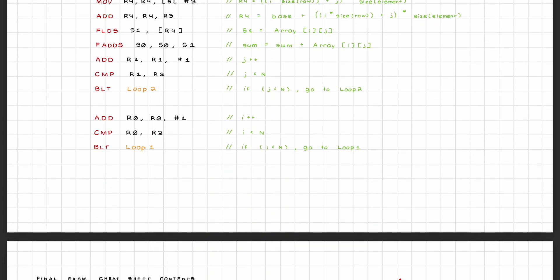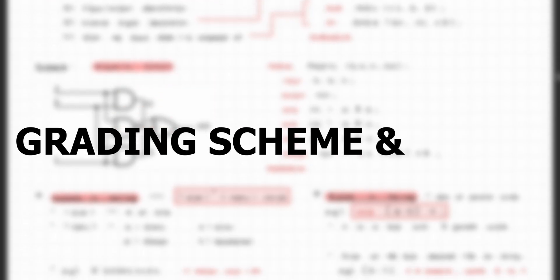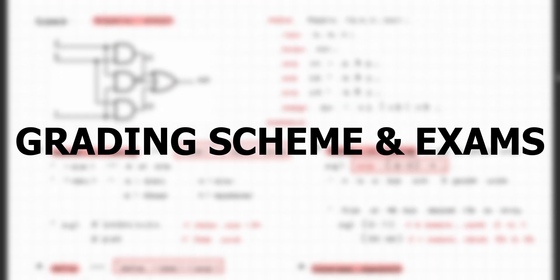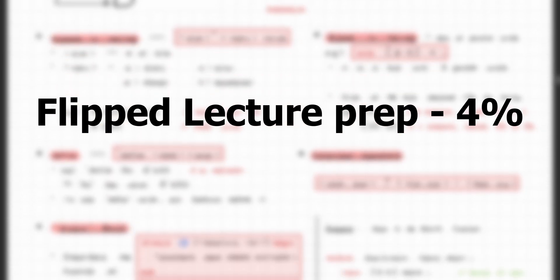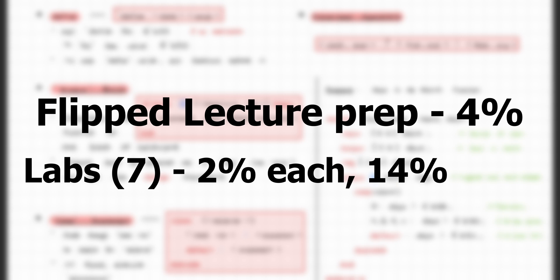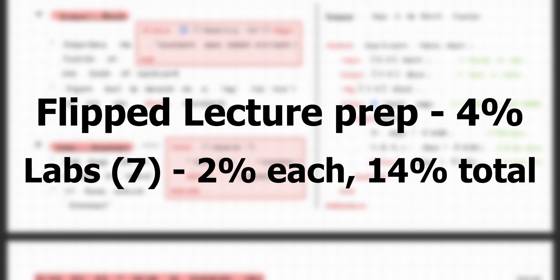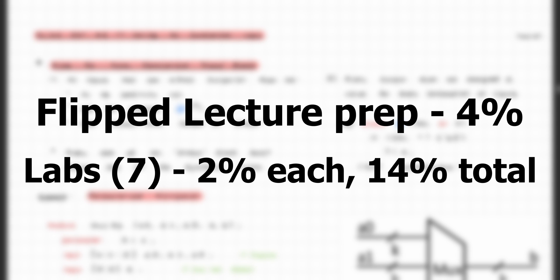I might be missing a few things here and there, but that's pretty much everything that you're going to learn in CPEN 211. In terms of the grading scheme, here's the breakdown of everything that you'll be graded on. Starting with your flipped lecture prep questions, these are weighted at 4% of your overall grade, and your 7 lab assignments will be weighted at 2% each, totaling up to 14% of your overall grade.